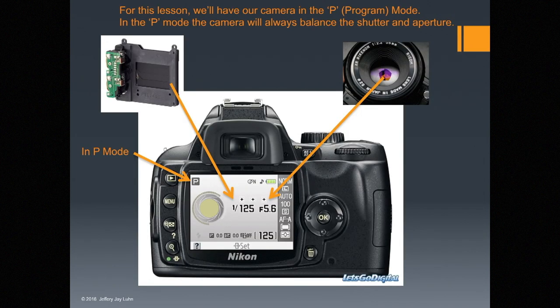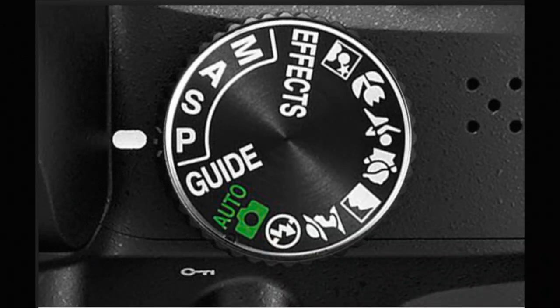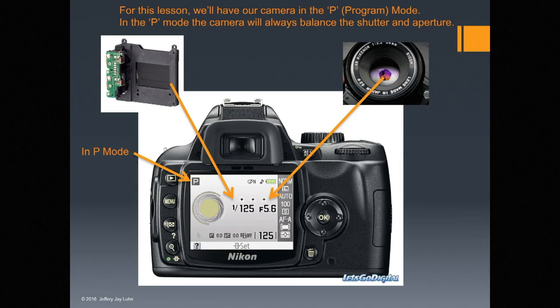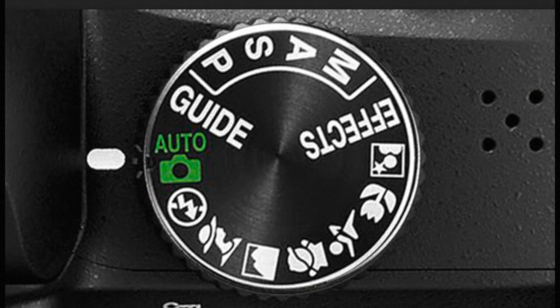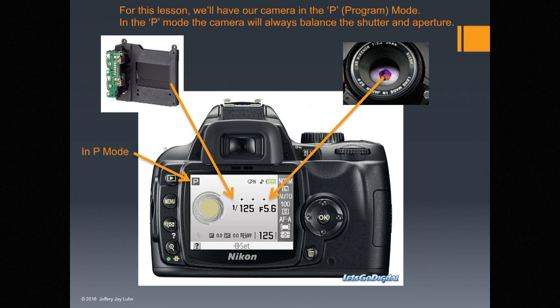So how do you know what your shutter speed is and what your aperture is? For this lesson, we'll have our camera in P mode — the program mode. In P mode, the camera will always balance the shutter and the aperture. P mode opens up other features like controlling the flash and changing the ISO. We don't want to do too many photographs in auto mode — there's no reason to take the class if you're just going to stay in auto. On the display, the number on the left is 1/25th of a second — that's the shutter speed. On the right, it's F5.6 — the name of that aperture opening.